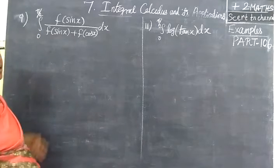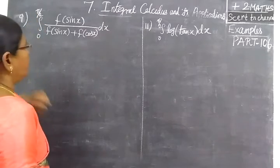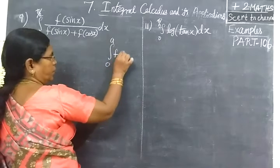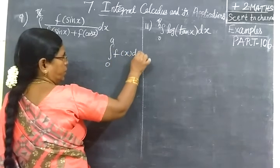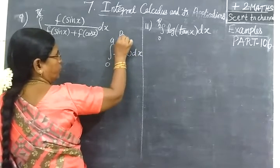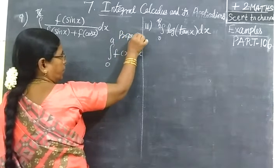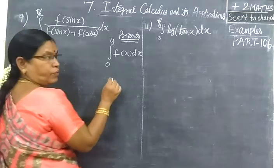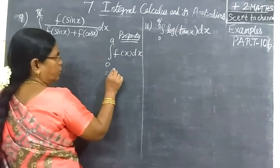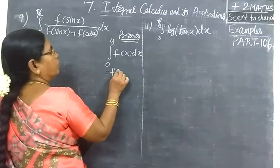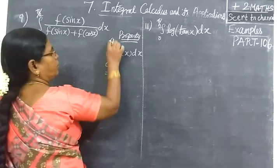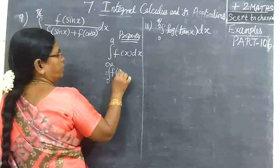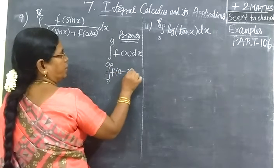Here we will see the limit 0 to A form. We know integral 0 to A, F of X dx. By property, we know the property: integral 0 to A, F of X dx. In the limit, I am going to add.